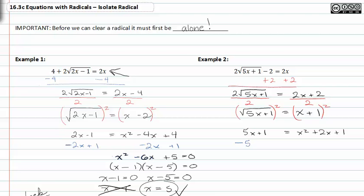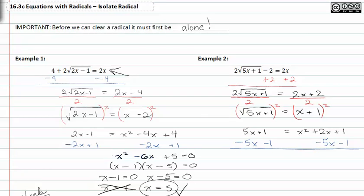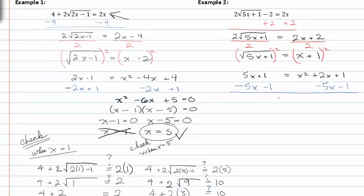Now set the equation equal to zero. This is done by subtracting five x from both sides and subtracting one from both sides. Scrolling down, we have x squared minus three x is equal to zero. We have a common factor of x which we can pull out, and we'll have x minus three as the other factor. So now I'll set my factors equal to zero.